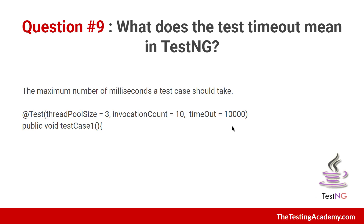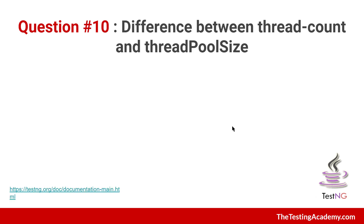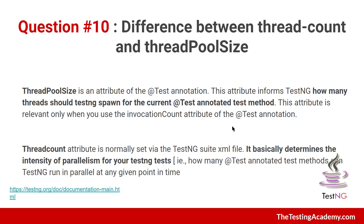The most important question: what is the major difference between thread count and thread pool size? I highly recommend checking the TestNG documentation for this. `threadPoolSize` is an attribute of your `@Test` annotation that tells TestNG how many threads to spawn for a current test method — it is relevant only when using invocation count. `threadCount`, on the other hand, is used for the intensity of parallelism; setting thread count equal to 3 means you want the method to be run by three different threads. I strongly recommend the testng.org documentation for an in-depth tutorial.